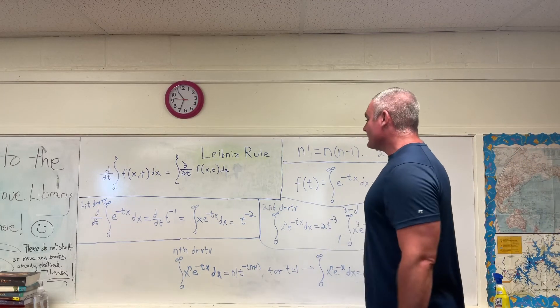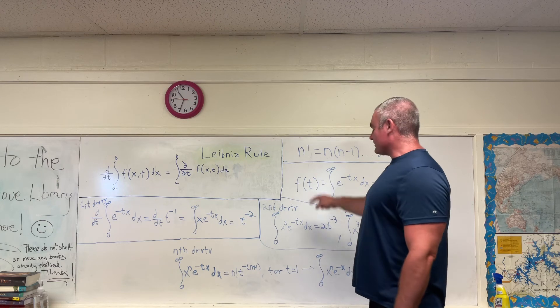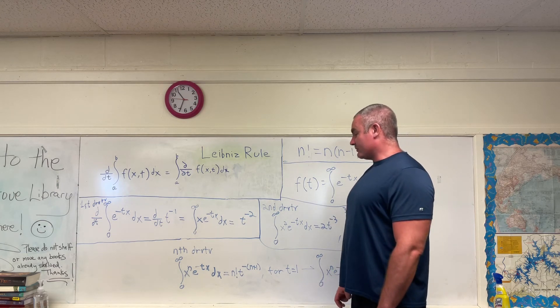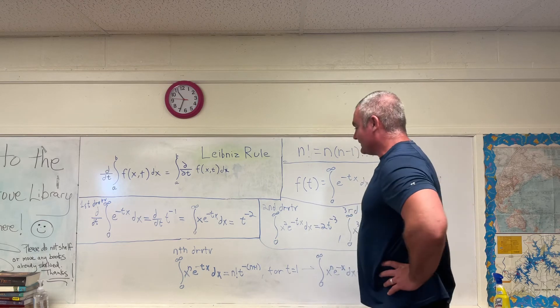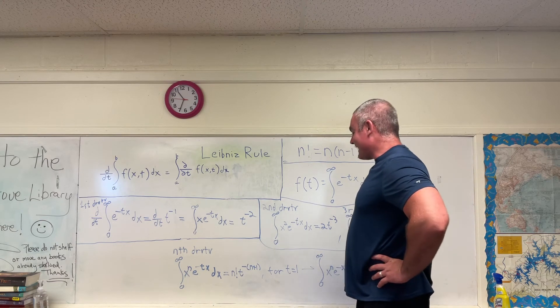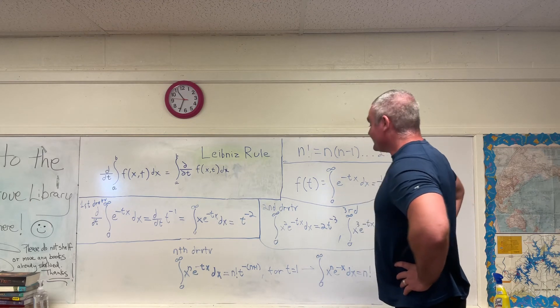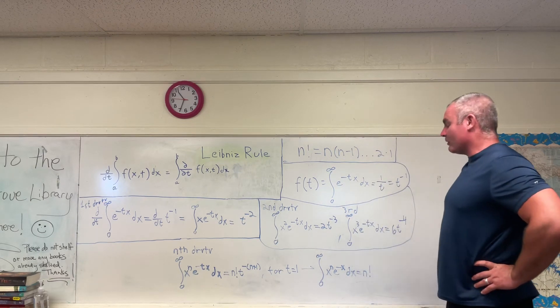So let's just jump ahead to the nth derivative. The nth derivative of our function of t will give the following. Integral from 0 to infinity of x to the n times e to the negative tx dx is equal to n factorial times t to the negative n plus 1.